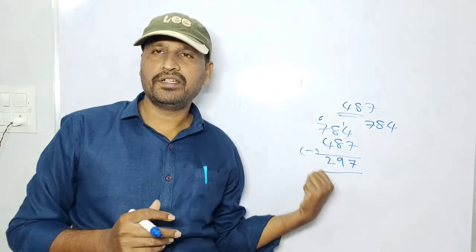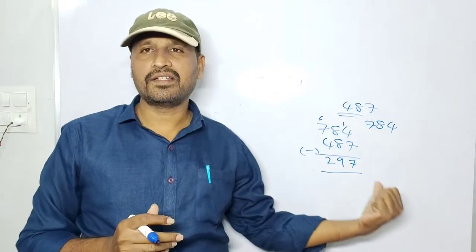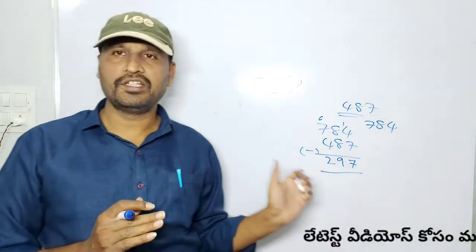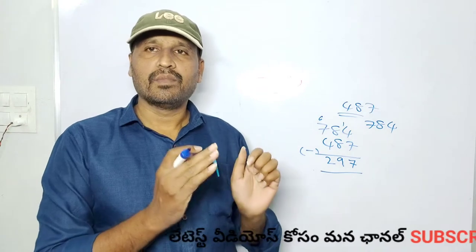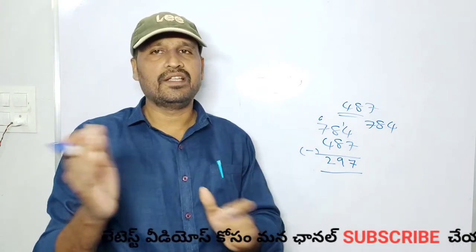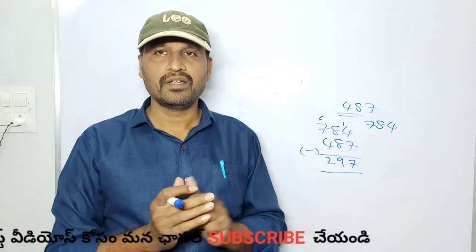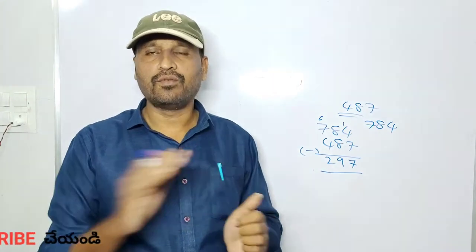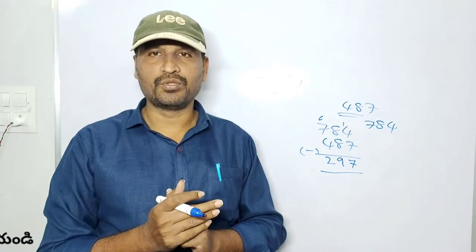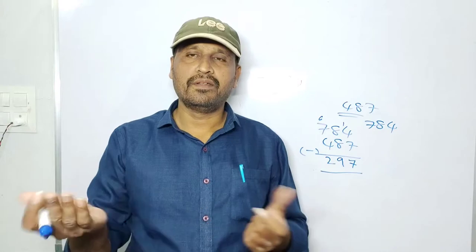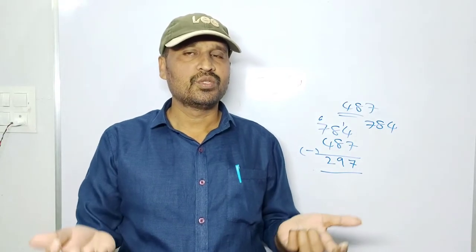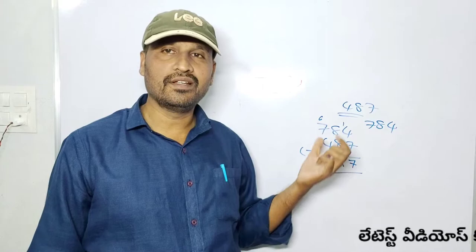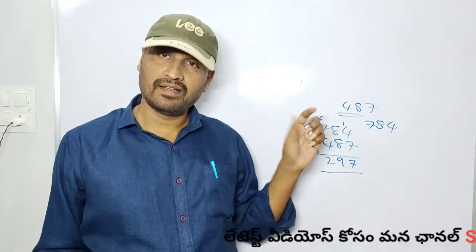Now we will explain the total answer. The first digit is 2 and the last digit is 7. First digit plus last digit equals 9. This is the logic.